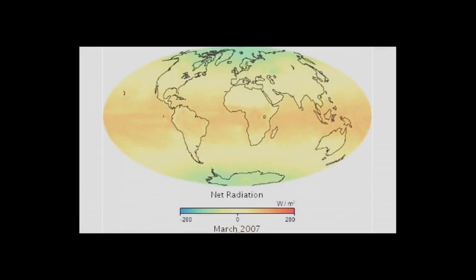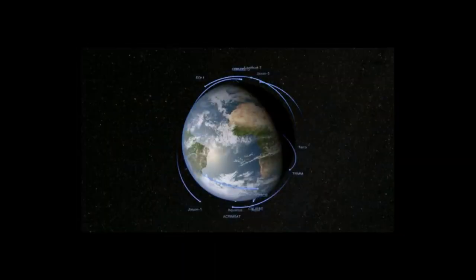To know if changes we see are due to human activity or due to long-term variability in the Earth's climate system, we need a long period of coverage by our instruments. CERES instruments and their predecessors have been taking Earth's temperature for almost 30 years.